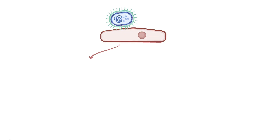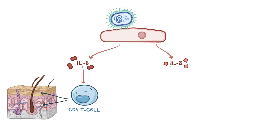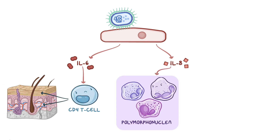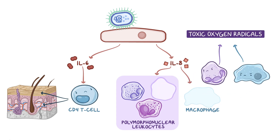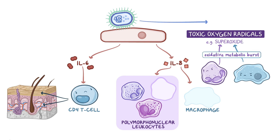After attachment, Haemophilus ducreyi makes epithelial cells secrete pro-inflammatory cytokines like IL-6 and IL-8. IL-6 causes CD4 T-cells to accumulate in the epidermis and dermis, while IL-8 leads to accumulation of polymorphonuclear leukocytes and macrophages. Neutrophils and macrophages try to kill the invading bacteria by generating toxic oxygen radicals such as superoxide. However, Haemophilus ducreyi produces copper-zinc superoxide dismutase, which converts superoxide radicals to oxygen and hydrogen peroxide, allowing it to survive the attack.